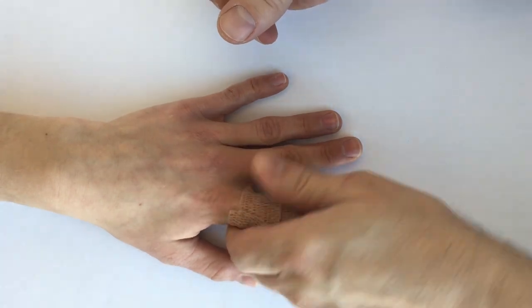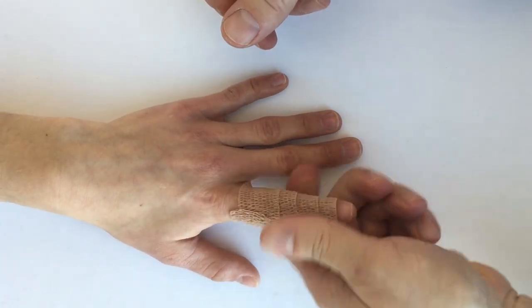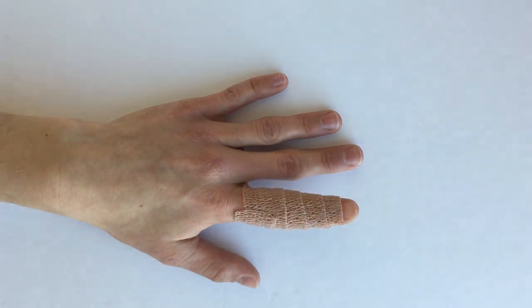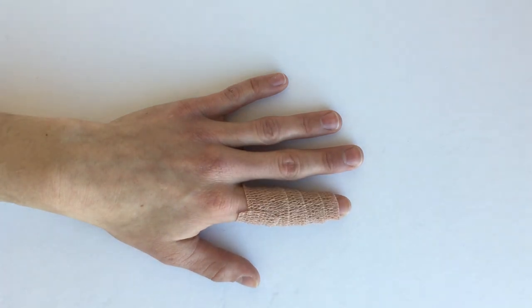Once you have the whole finger wrapped, you can compress it down a little bit to get it to stick to itself, and that is how you would use Coban for an edematous finger.